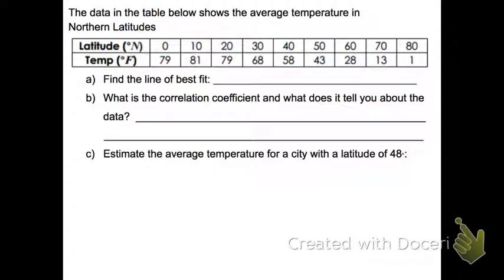Let's go over this example. It says the data in the table below shows the average temperature in northern latitudes. So it's giving us the latitude and the temperatures. They want us to come up with a line of best fit and then to answer some questions using that.